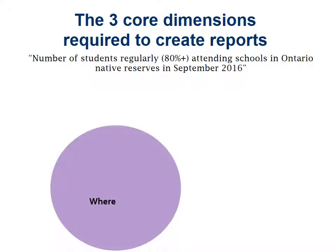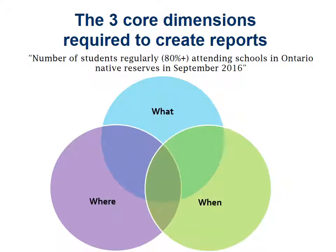The first pillar would be the where. In this instance, it would be schools in Ontario Native Reserves. So there's a lot of information in there — we have the schools in Ontario, which is a province in Canada, specifically in the Ontario Native Reserves, which are areas in Ontario. And we have the what: number of students regularly attending. So this is not just the number of students total that are enrolled in a class, but also the number of students that are attending each class, and we're looking at an average number over time. And what is that time period? September of 2016. So we have a where, we have a what, and we have a when.